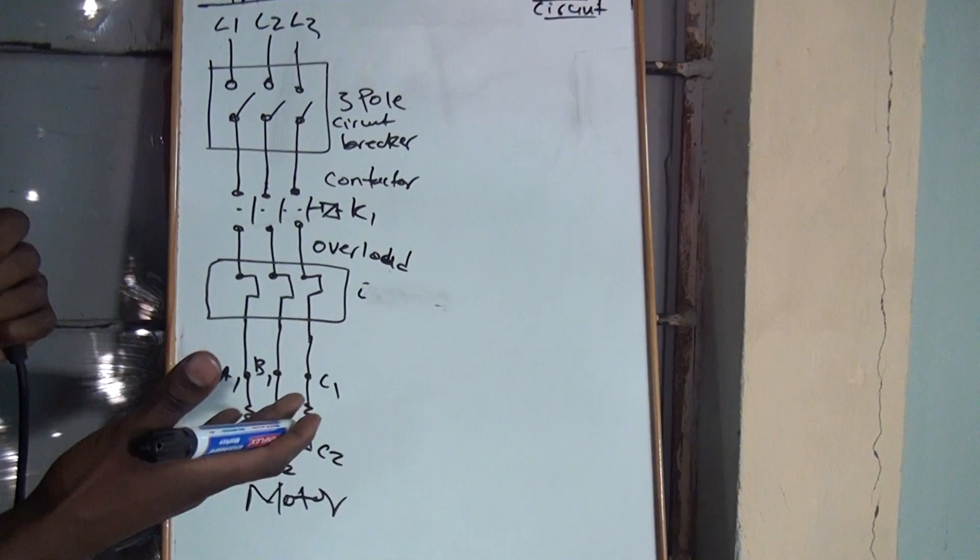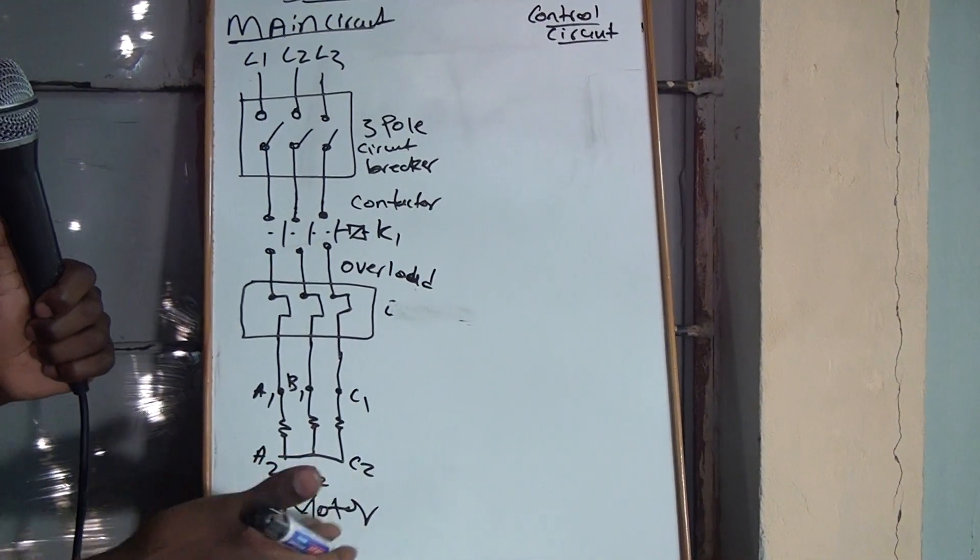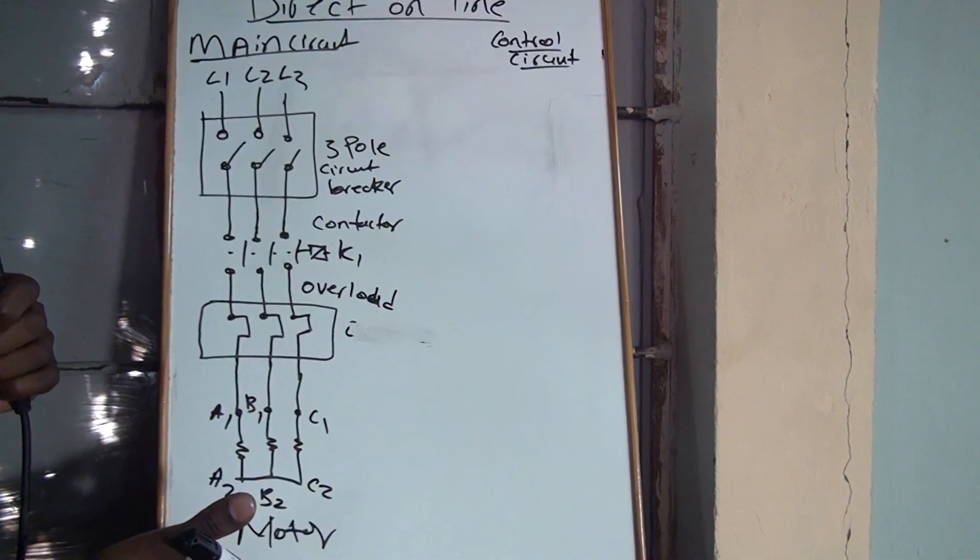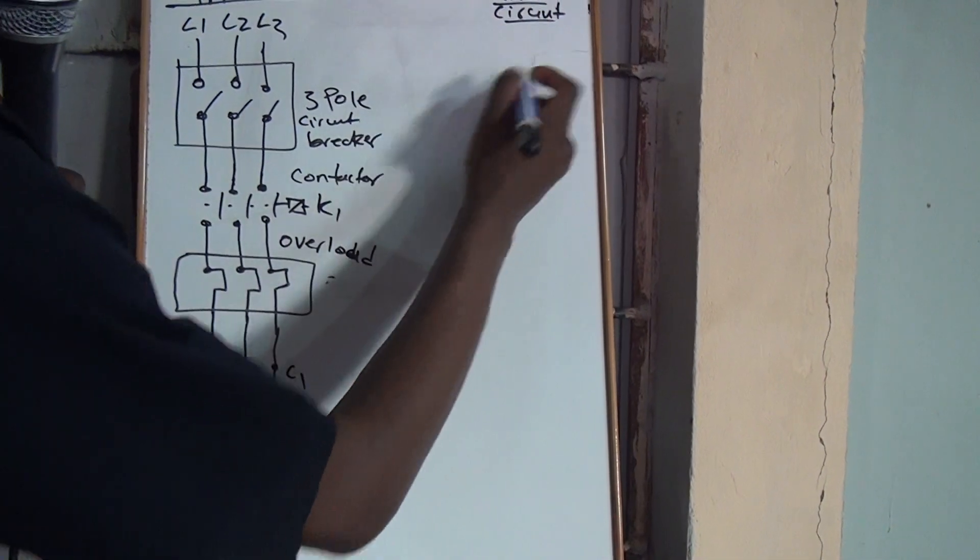So now, your motor is isolated from the supply. And now, your motor is also protected because of your safety devices. So now, I'll draw the control circuit.